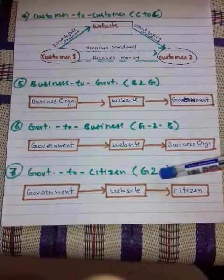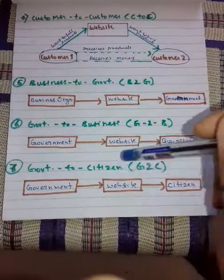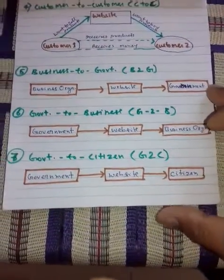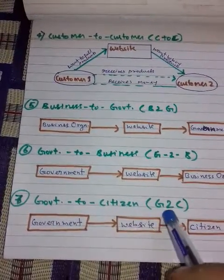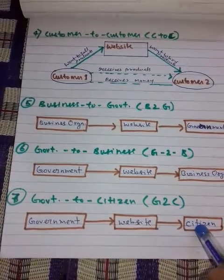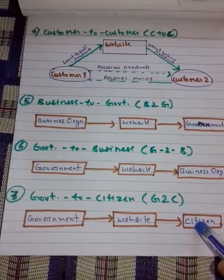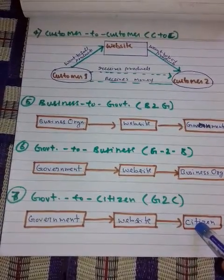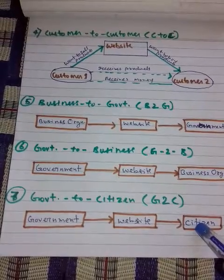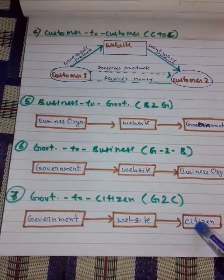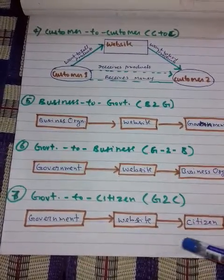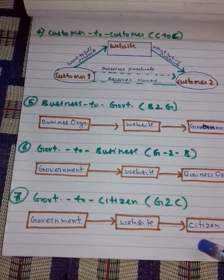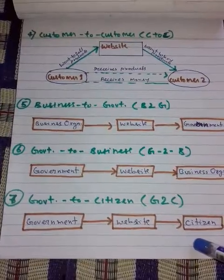The third e-governance model is Government to Citizens, also known as G2C. The government uses the G2C model website to approach citizens in general. Such websites support auctions of vehicles, machinery, and other materials, and also provide services like registration of births, marriage certificates, and death certificates. The main objective of Government to Citizens websites is to reduce the average time for fulfilling various government services for citizens.